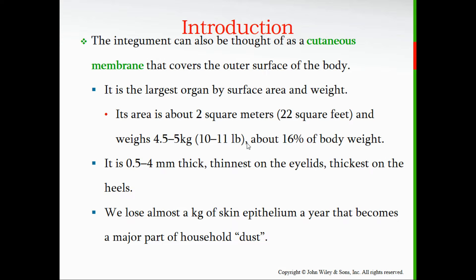Depending on the area of skin, it ranges from half a millimeter to four millimeters thick. To visualize a millimeter, stacking about four or five index cards gives you roughly that thickness — so half a millimeter is about two or three cards. Thinner skin is found on areas like the eyelids, while thicker skin — up to four millimeters — is found in high-traffic, high-friction areas like the heels.